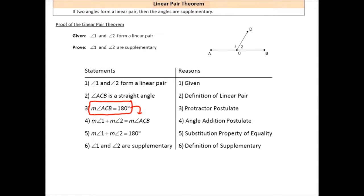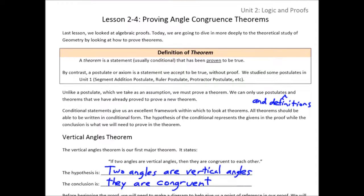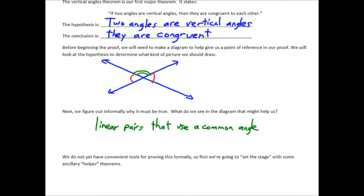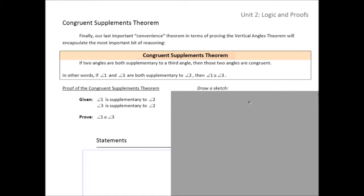We can tell that we're done with the proof when we've reached a statement that matches what we were trying to prove — the conclusion of the original conditional statement. Let's go back and take another look at our plan. We've showed that vertical angles form linear pairs, and we just proved that linear pairs are supplementary. If only we knew that two angles that are supplementary to the same angle were themselves congruent, then we'd be done — we could prove the vertical angles theorem. This is the congruent supplements theorem: if two angles are both supplementary to the same angle, then those two angles are congruent.